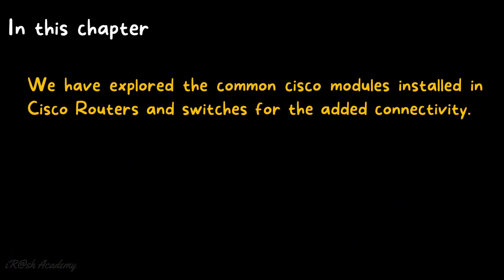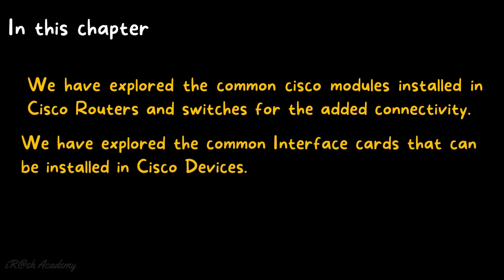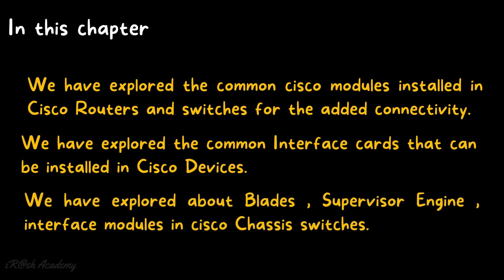In this chapter we explored the common Cisco modules installed in Cisco routers and switches for added connectivity, the common interface cards that can be installed in Cisco devices, and finally the blades, supervisor engine, and interface modules in Cisco chassis switches.